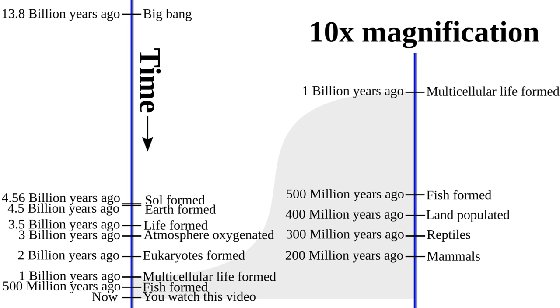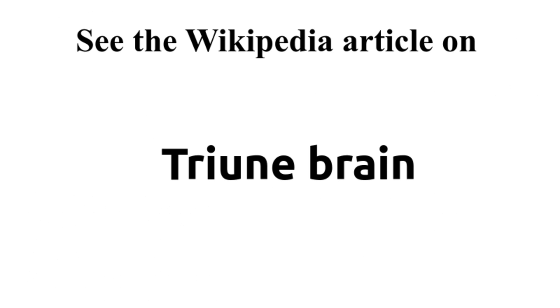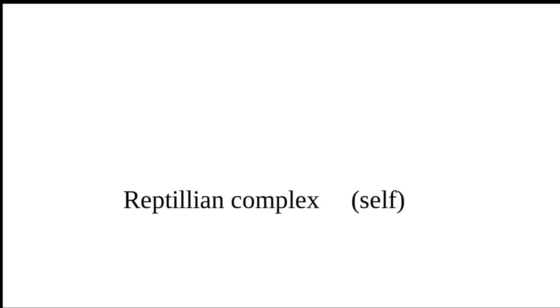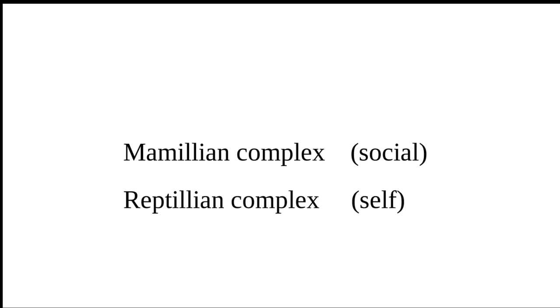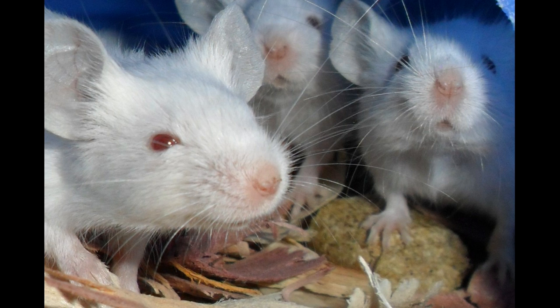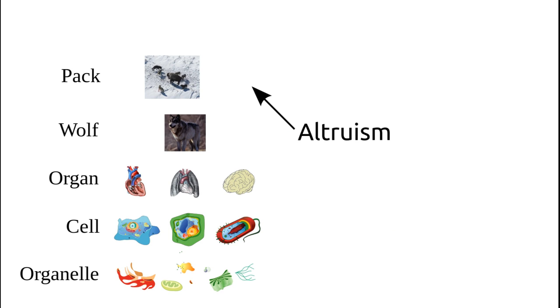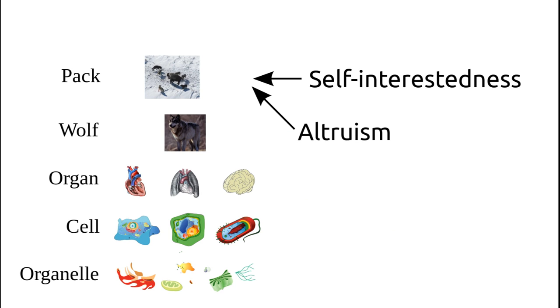About 200 million years ago, mammals emerged with a better way of thinking. Mammals have an additional layer in their brain called the mammalian complex. Unlike the reptilian complex, which only seeks the well-being of the individual, the mammalian complex gives animals a desire to seek after the well-being of their social groups. Once again, we see the next level of altruism. It may be characterized by a pack of wolves — individual members may sacrifice themselves for the good of the pack. And that which is altruism at the level of a wolf is self-interestedness at the level of the pack.